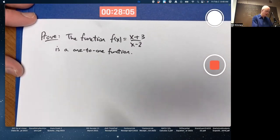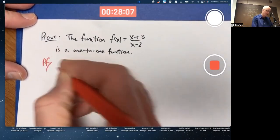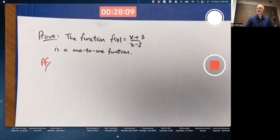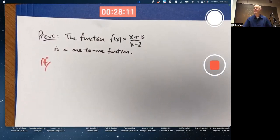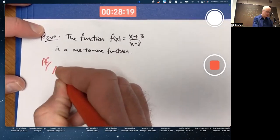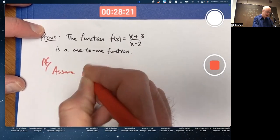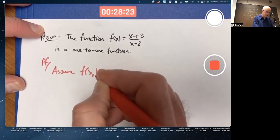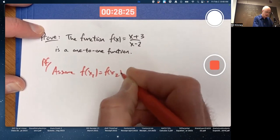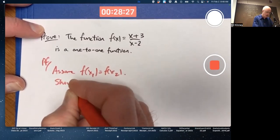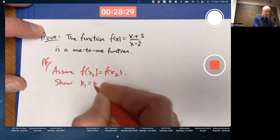How do you prove a function is one-to-one? If you assume that the outputs are equal, you must show that the inputs must be equal. Assume f of, say, x1 equals f of x2. Show that x1 equals x2. That's what you've got to do.